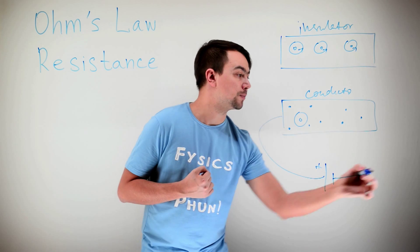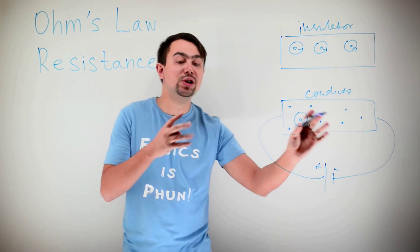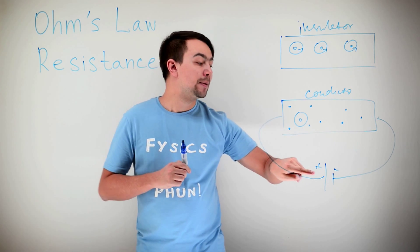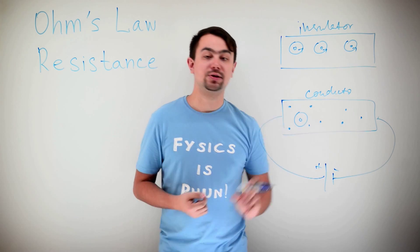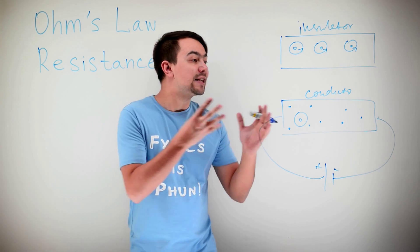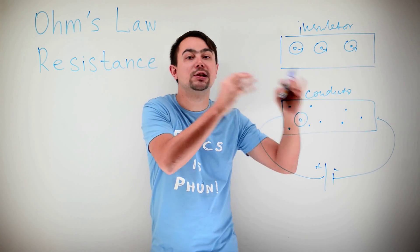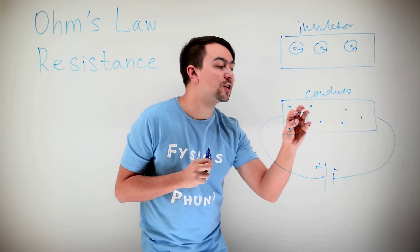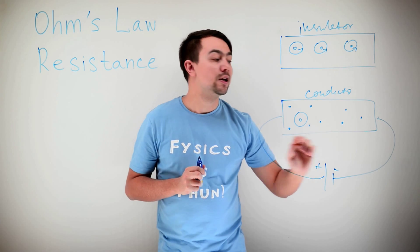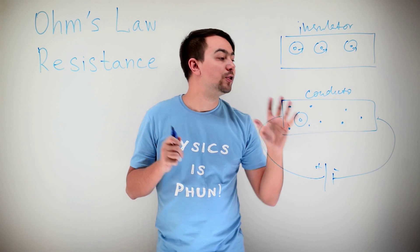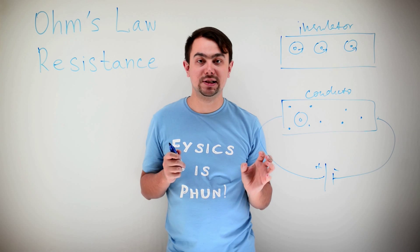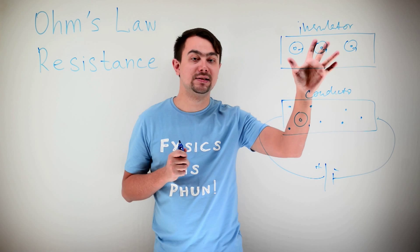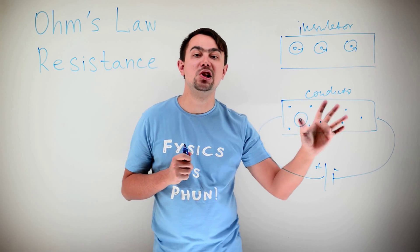When you connect a battery to a conductor, which is positive and negative, these free electrons, which are negatively charged, they rush towards the positive terminal of the battery. That's the difference between insulator and conductor. In an insulator, all the electrons are tied to the atom. And in a conductor, some of them are free. The amount of free electrons determines the conductivity. So insulators have very high resistance and conductors have very low resistance.